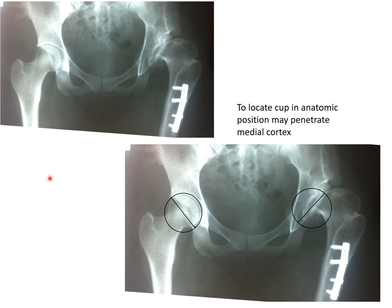On the AP view, simple drawings for the acetabulum show that to place the cup in the anatomical site of the acetabulum, you may need to slightly penetrate the medial wall, but this is not a major problem in total hip replacement.